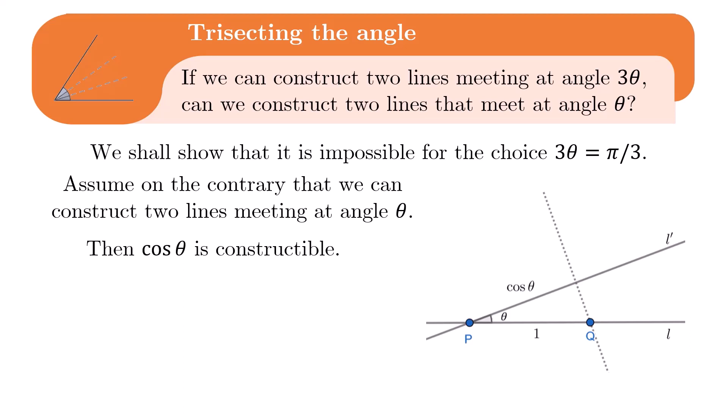To do this, suppose the two lines L and L' meet at P. Construct Q on line L such that it is a distance 1 away from P, and draw the line perpendicular to L' passing through Q. In this manner, we have actually constructed cosine theta.